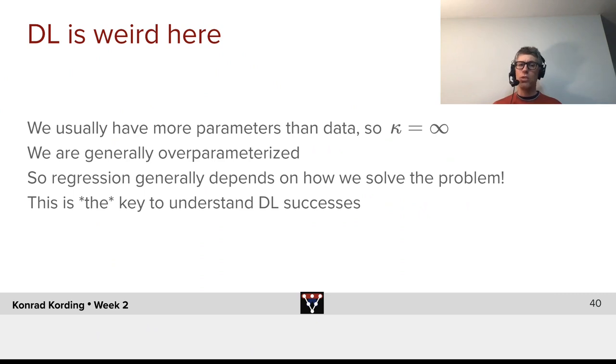In lots of cases, we're generally over-parameterized. So, regression generally depends on how we solve this problem. So, the dynamics of learning all of a sudden matters. And realizing this, that in a way, we have this degree of freedom here, that there's not one solution for us, is the key to understanding deep learning successes. It's also the key for regularization, about which we will learn a lot during week five.